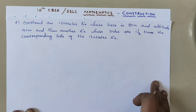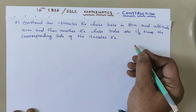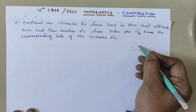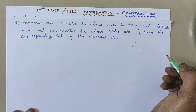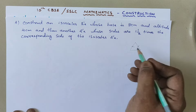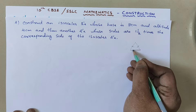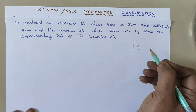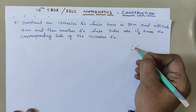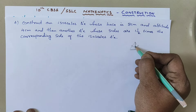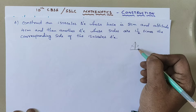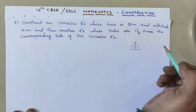For this question you will need to understand what an isosceles triangle is. In a triangle, if any two sides are equal, then it is known as an isosceles triangle. Here, the base of the isosceles triangle is given, and the altitude is the perpendicular line — that is, the height. The height of the isosceles triangle is 4 cm according to the given question.